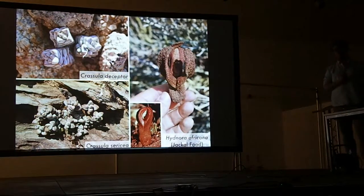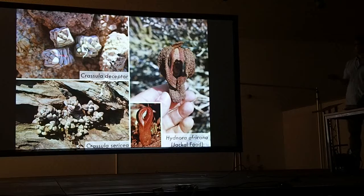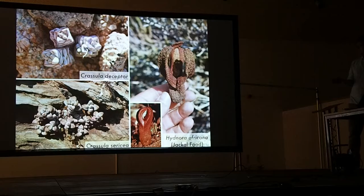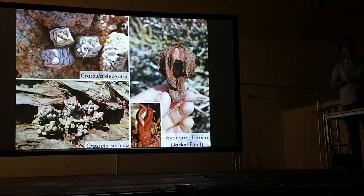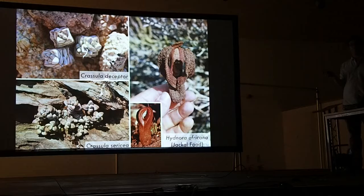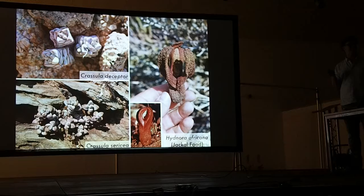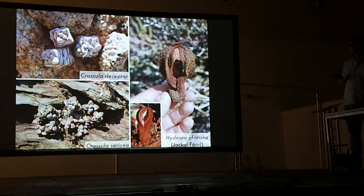Here are some more xerophytes. Crassula decepta is a chasmophyte — you find it growing in the cracks of rocks. And Crassula sericea. This species here, which is very alien looking, is Hydnora africana — a parasitic plant with no chlorophyll at all that lives off the roots of plants in the Euphorbiaceae family. It's pollinated by beetles that are drawn into it, get trapped inside, and create pollination. It's a pretty weird plant.